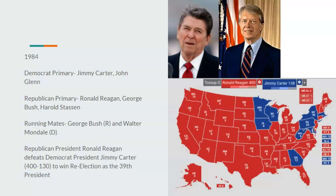The 1984 election comes around. People still aren't happy — this Great Recession lasts a long time. Ronald Reagan jumps back up saying he would have gotten the country out of that recession if given a chance, and Carter hasn't. Carter is primaried by Ohio Senator John Glenn, while Reagan runs against George Bush and Harold Stassen. Reagan chooses George Bush as his running mate, letting bygones be bygones. Republican former President Ronald Reagan defeats Democrat President Jimmy Carter 400 to 130 to win as the 39th President in a landslide. Historians will look back noting it was worse under Carter because of hostage crises, oil crises, and energy crises during that period.